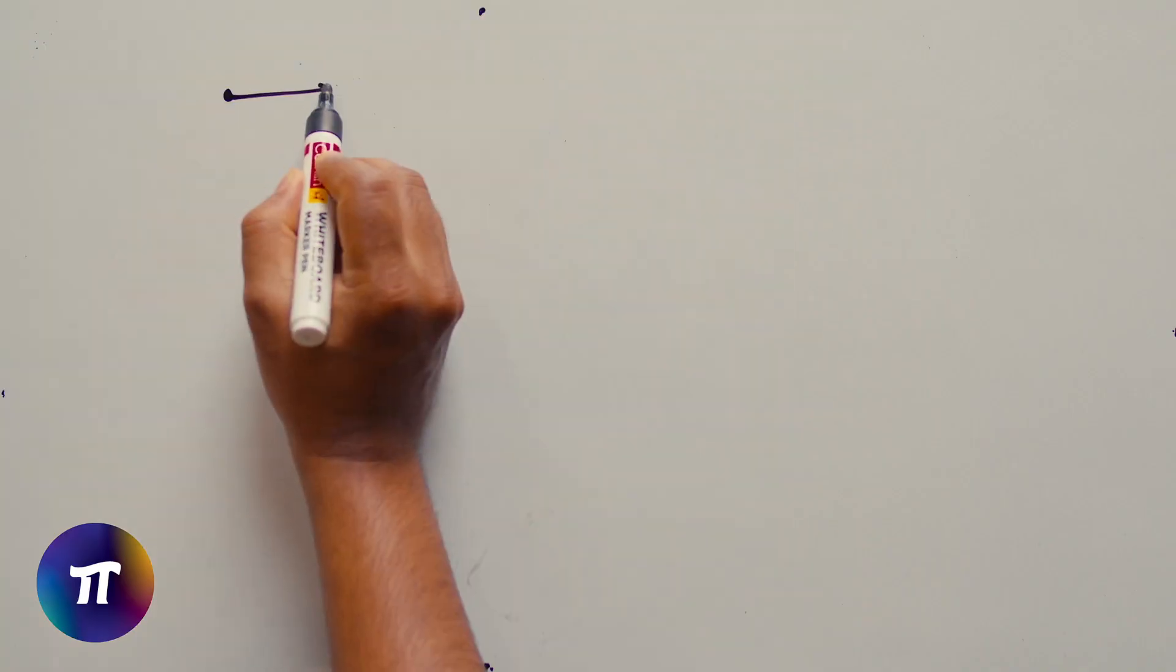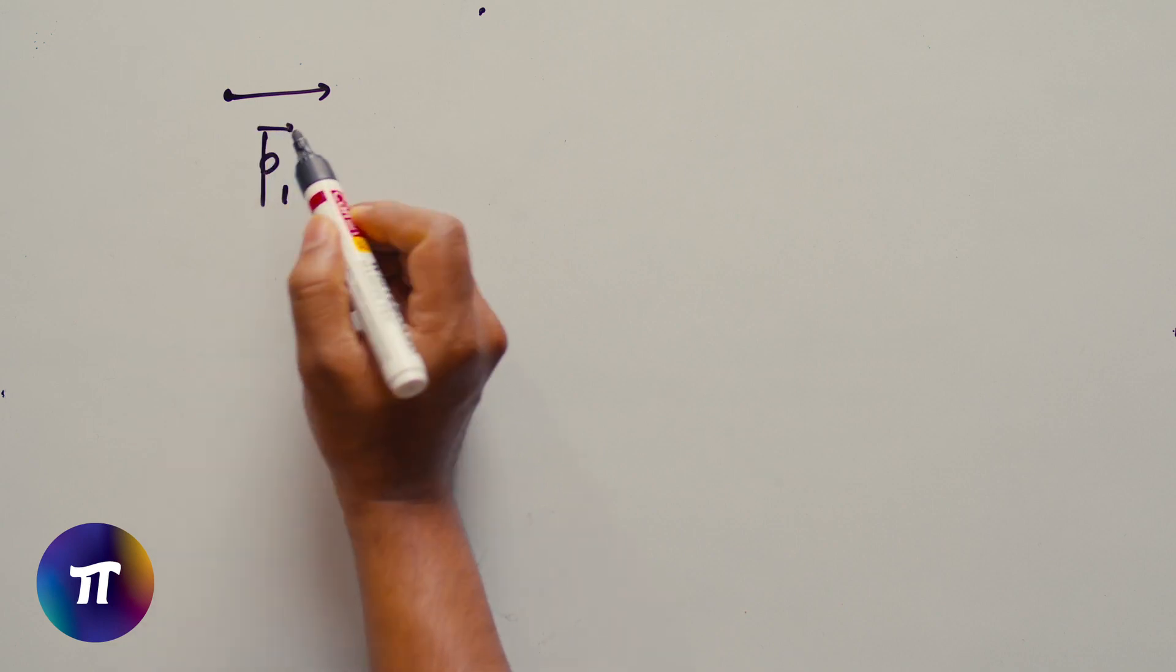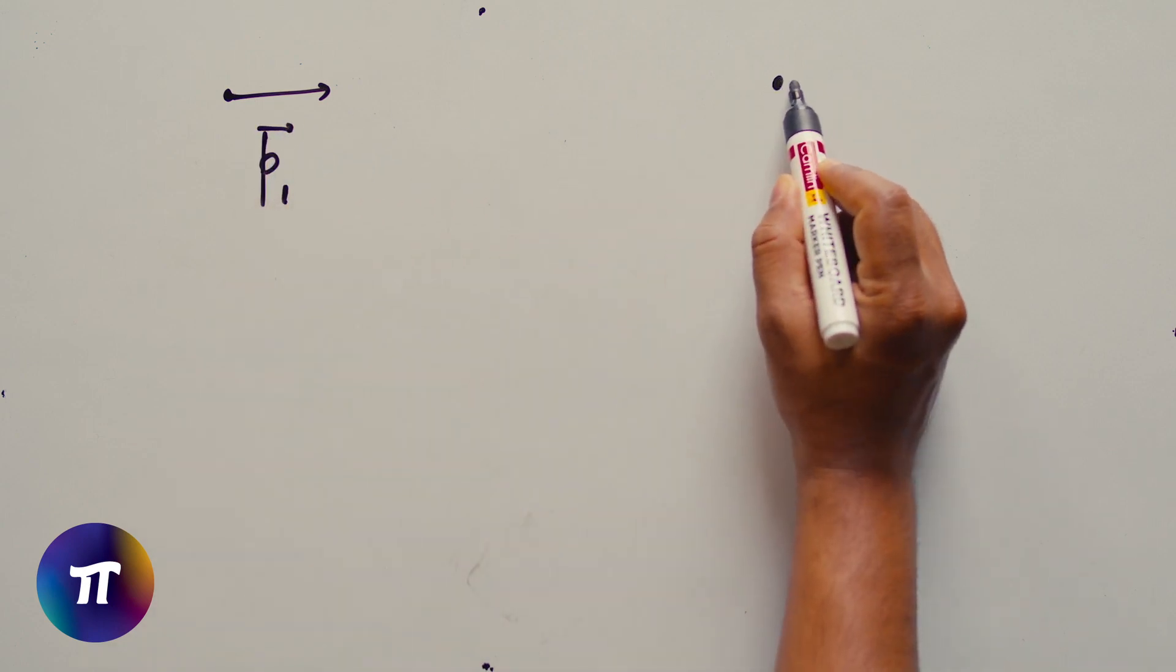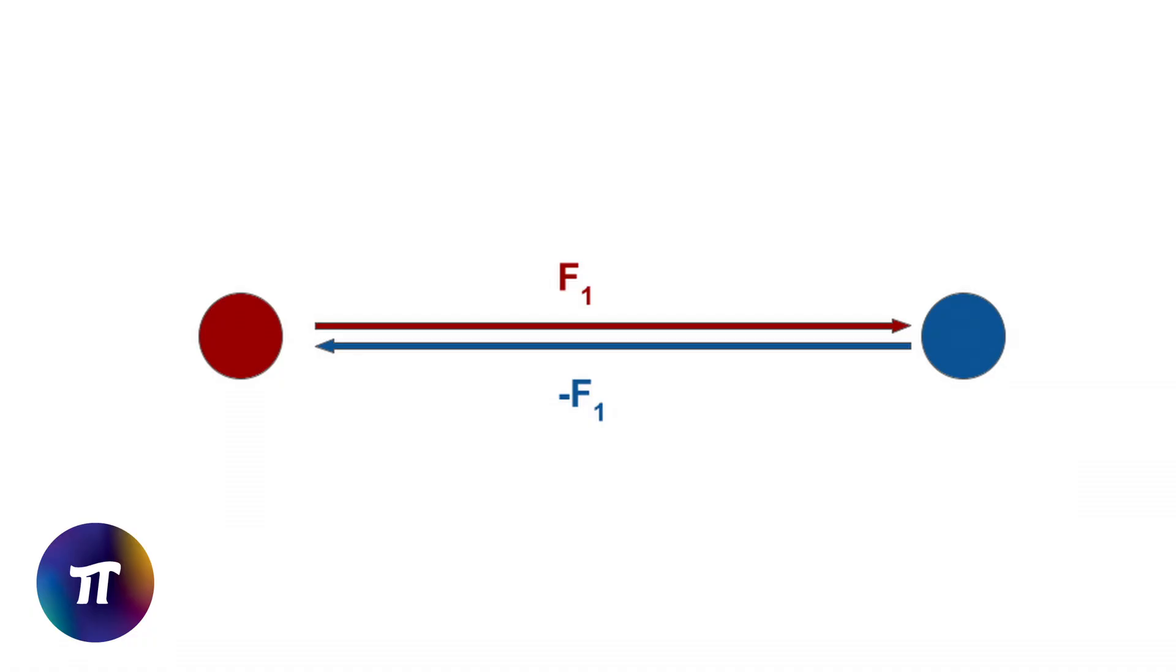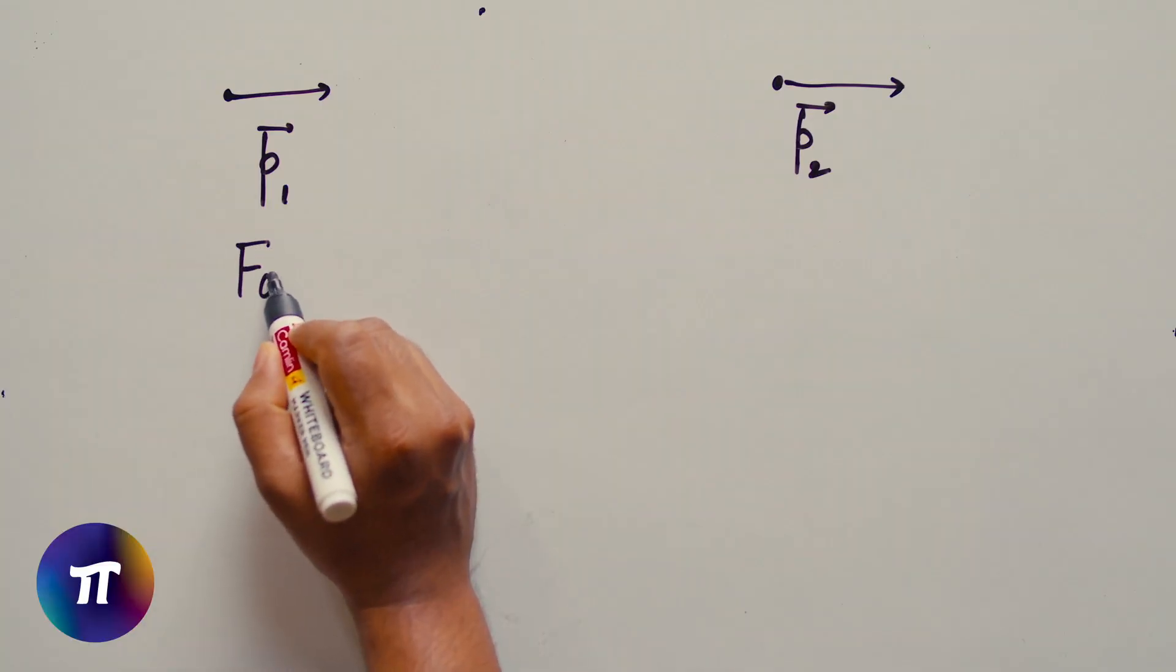Newton's third law says that every action has an equal and opposite reaction. Let's consider a system of two particles, one with momentum p1 and another with momentum p2. The net external force on the system is 0. Now in this system if the first particle applies a force f1 on the second particle then according to the third law the second particle will apply the equal and opposite reaction force minus f1 on the first particle.